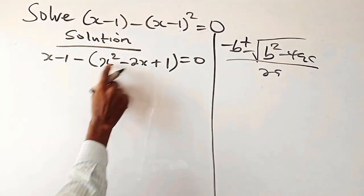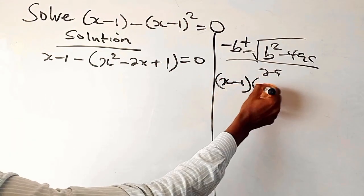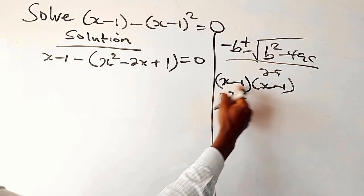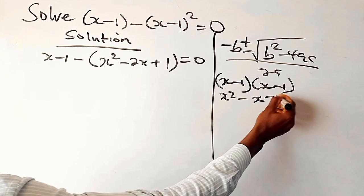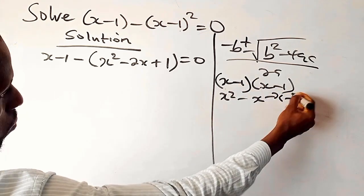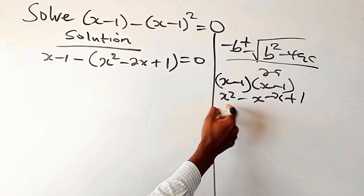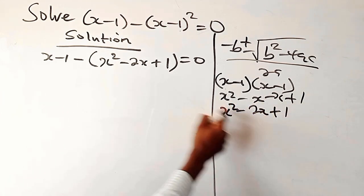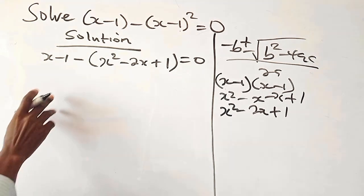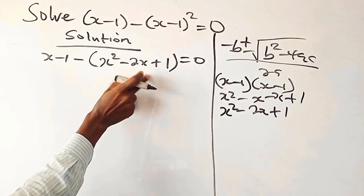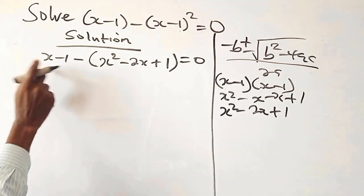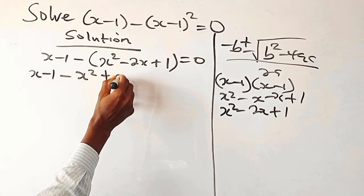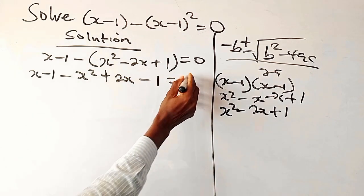We can also say x minus 1 times x minus 1 — you still get the same answer: x times x is x squared, minus x, minus x, and minus times minus is plus 1. So here you have x squared minus 2x plus 1. Now we open up the bracket with the minus: x minus 1, minus x squared minus x, plus 2x, minus x, plus minus 1, equals to 0.